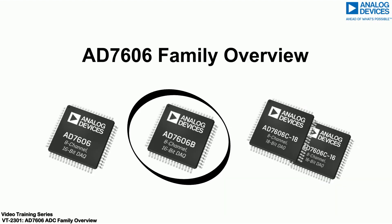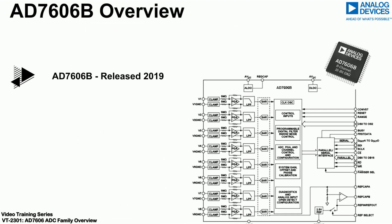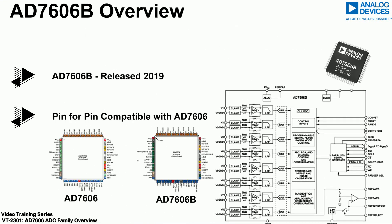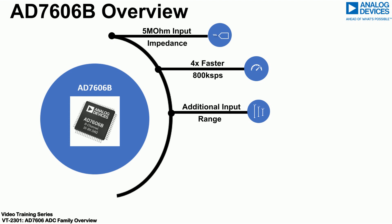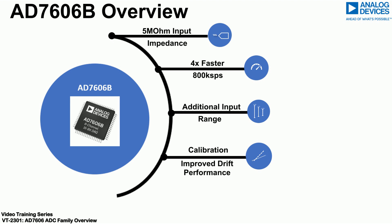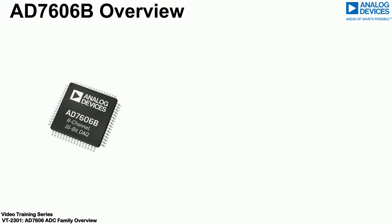The AD7606B, the next generation in the family released in 2019, is pin-to-pin compatible with the AD7606. It offers higher input impedance and runs up to 4 times faster. Key differences include an additional ±2.5V input range, phase, gain and offset calibration, as well as an enhanced diagnostic feature set, enabling a more flexible, robust measurement solution.